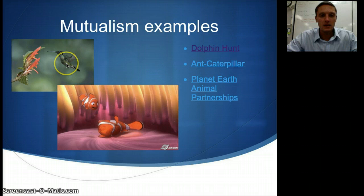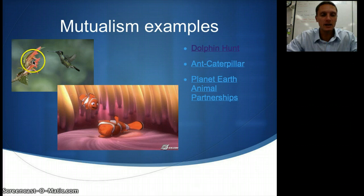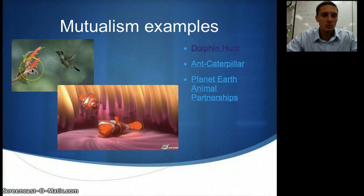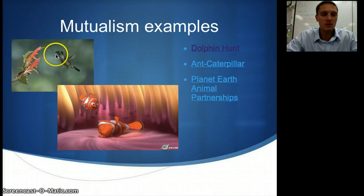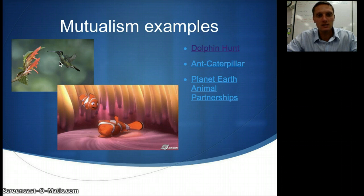This hummingbird is adapted with a beak that is able to fit inside a plant, so when it goes to collect nectar it's getting food, which helps the hummingbird. The plant is passing its pollen on to the bird. When the hummingbird puts its beak into the plant, it gets pollen on its beak and face, and when it goes to another plant it transfers that pollen, helping the plants to fertilize and reproduce. That's an example of mutualism.